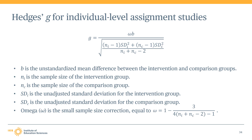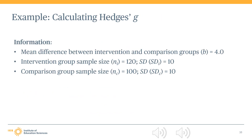This equation, along with all the important equations used by the WWC, is discussed in greater detail in Appendix E of the WWC Procedures and Standards Handbook. Let's walk through an example of how to calculate a Hedges G effect size for a continuous variable. In this example, we have sample sizes and standard deviations on a continuous measure, as well as an unstandardized mean difference for the intervention and comparison groups. The difference in means is 4.0, reported as an unstandardized coefficient from a linear regression model that included a dummy variable indicating intervention group status.